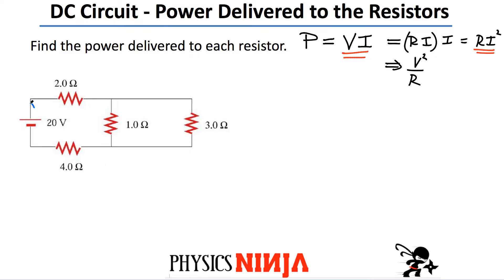For the power supply I'll use the P = VI form, which means I need to know the current through the battery and through each resistor. There are several loops and branches, so you have to be careful. I'm going to label the currents: I1 is the current flowing up until the branch point, which is also the same current through the 4-ohm resistor. At the junction, part flows down through the 1-ohm resistor — that's I2 — and part flows through the other branch — that's I3.